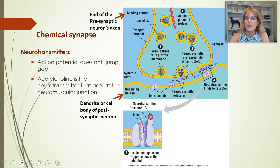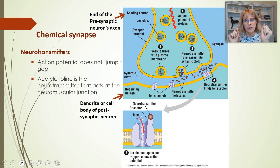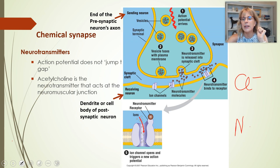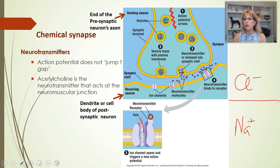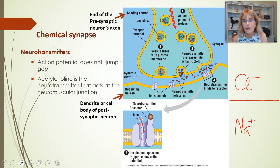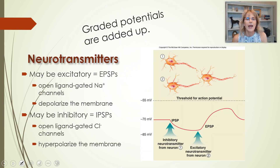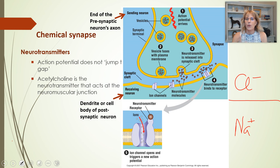When the ligand-gated channel opens, it allows ions to go through. There are two different kinds of ligand-gated channels: ones that let chloride go through, and ones that let sodium go through. Whether chloride or sodium passes through is not dictated by the neurotransmitter — it's only dictated by the kind of channel that the ligand bound to. We'll start there at the beginning of our next video.